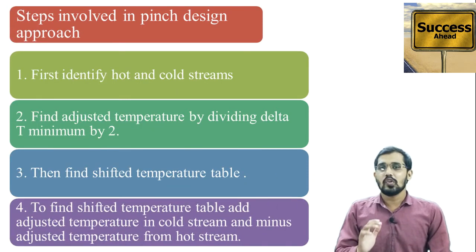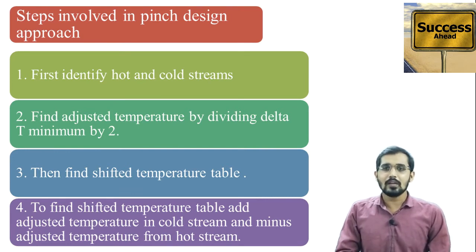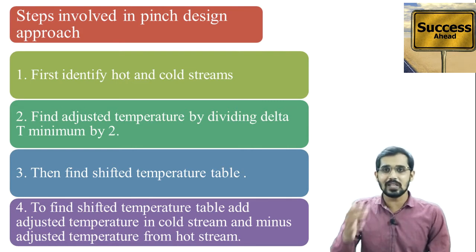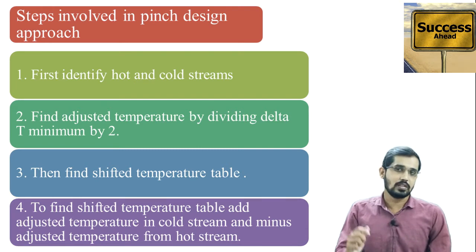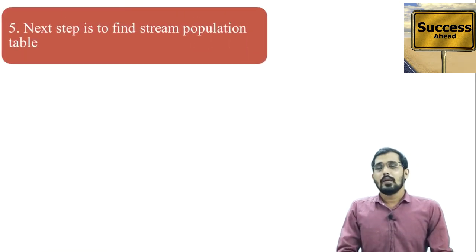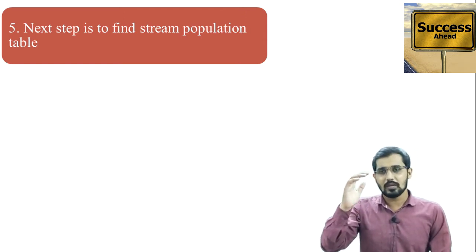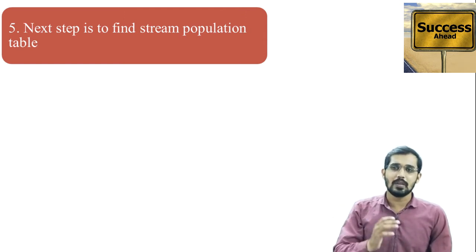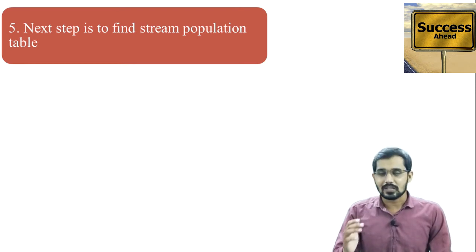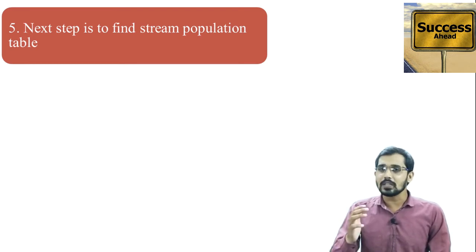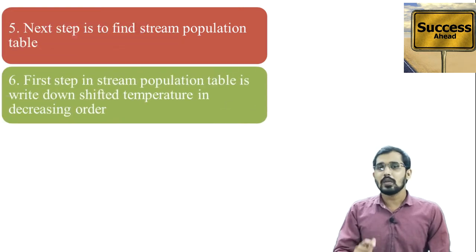To find the shifted temperature table, add the adjusted temperature to the cold stream and remove the adjusted temperature from the hot stream. The next step is to find the stream population table, where we calculate various ΔH values, Cpc values, Cph values, and extra utility values. I will explain all these steps now.